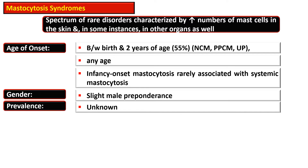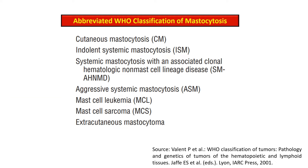However, it can affect any age group. Infancy-onset mastocytosis is rarely associated with systemic mastocytosis. There is a slight male preponderance and prevalence is unknown. The abbreviated WHO classification divides mastocytosis into cutaneous mastocytosis, indolent systemic mastocytosis, systemic mastocytosis with an associated clonal hematological non-mast cell lineage disease, aggressive systemic mastocytosis, mast cell leukemia, mast cell sarcoma, and extracutaneous mastocytoma.